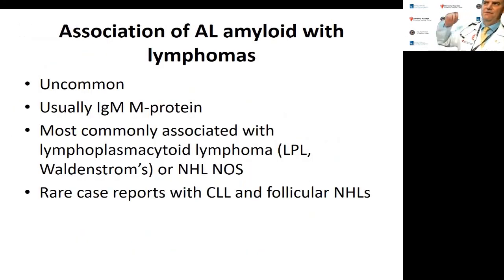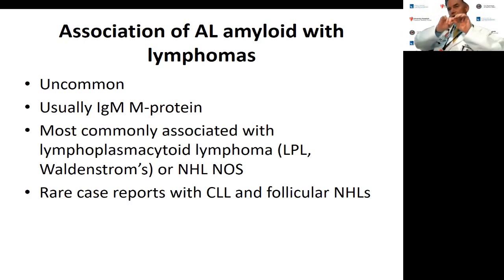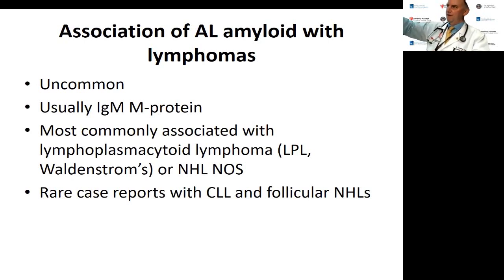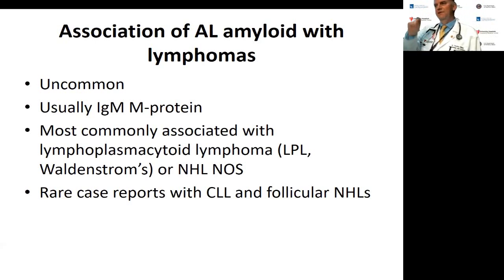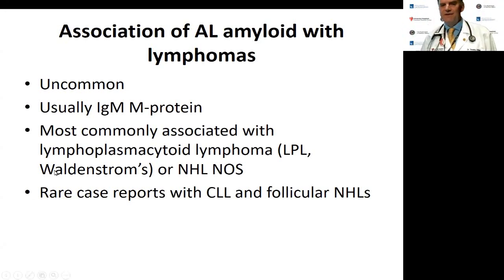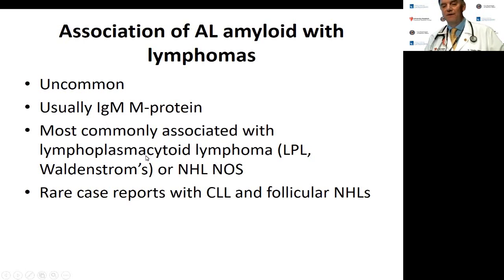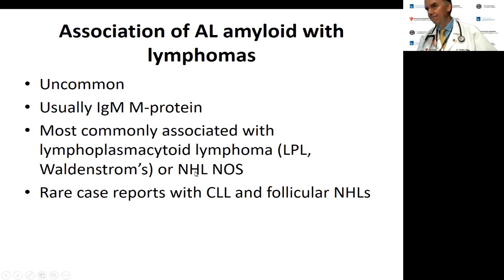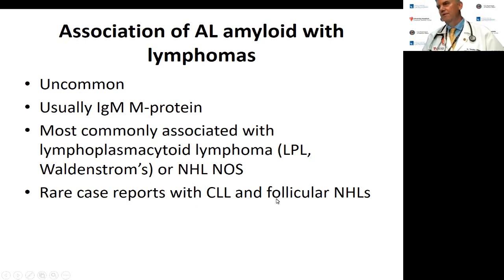Because plasma cells are end-stage B cells, other B cell development cells can also produce immunoglobulin and become malignant. B cell lymphomas may be associated with some forms of AL amyloidosis — uncommonly, and usually with an IgM M protein. This is typically associated with Waldenstrom's macroglobulinemia or lymphoplasmacytic lymphoma, or non-Hodgkin lymphoma. There have been rare case reports with CLL or follicular lymphoma.